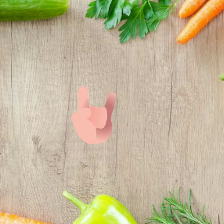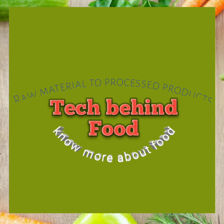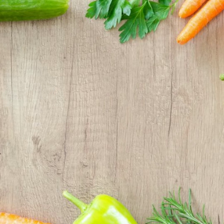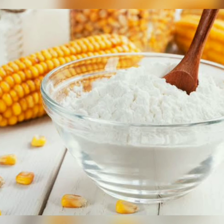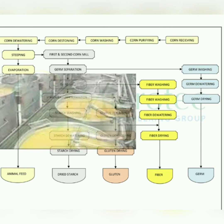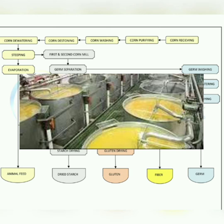Welcome back to the YouTube channel Tech Behind Food. In this video we'll be discussing starch. This flow chart shows the milling of corn. First, corn is received, then purified. After washing and de-stoning, corn is de-watered. Next is steeping — the purified corn kernels are transferred into a tank containing steep water.